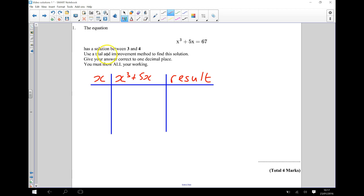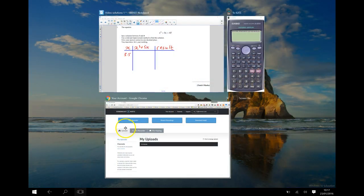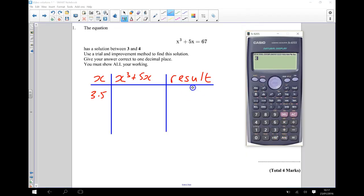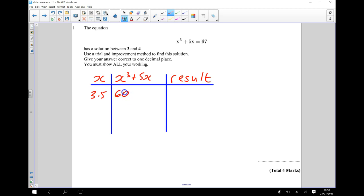So as we're being told that our solution is between 3 and 4, a sensible place for me to start would be halfway between those two values, which is 3.5. And I'm going to see if I input 3.5 in as x, so I do 3.5 cubed plus 5 times 3.5, I see what that is compared to 67. So using my calculator now, I do 3.5 cubed plus 5 times 3.5, and that tells me that I have got 60.375. So I'm going to write that down, 60.375, and that is lower than 67, so I'm going to say too low.